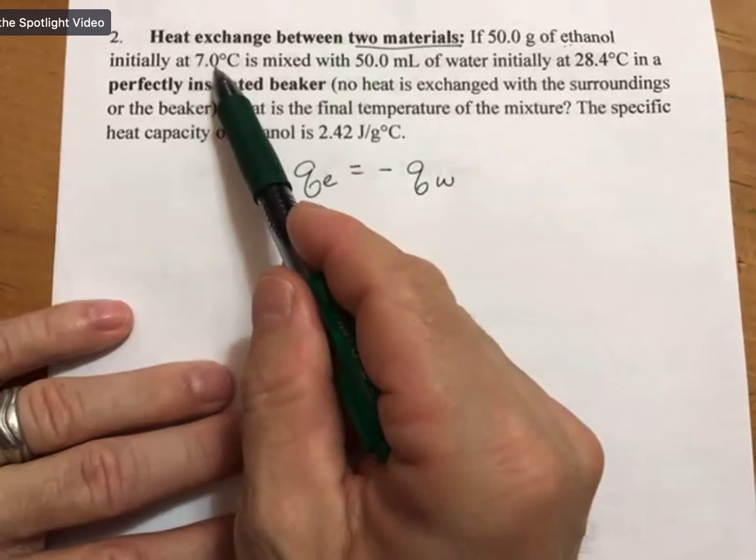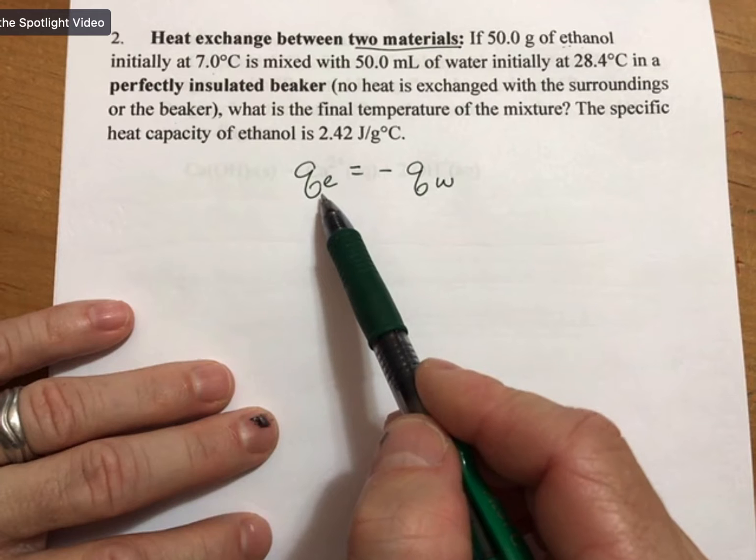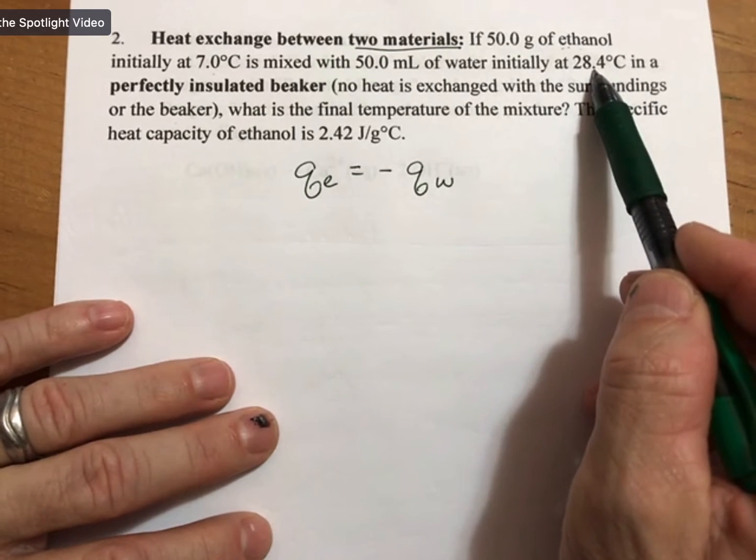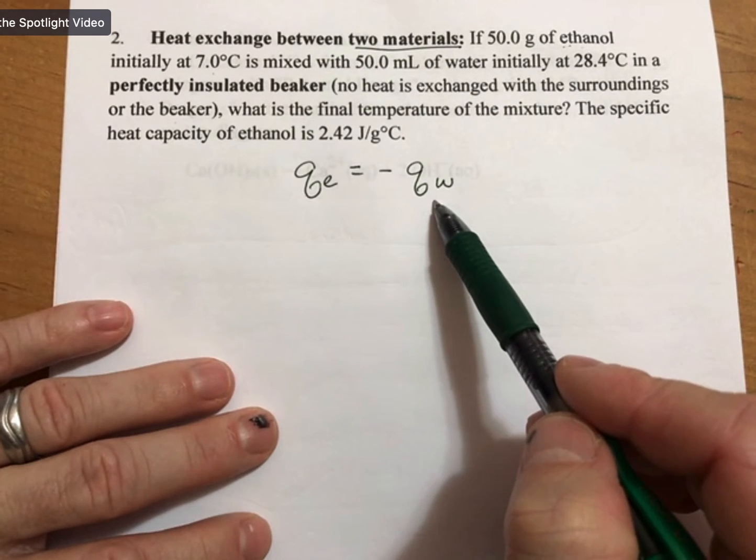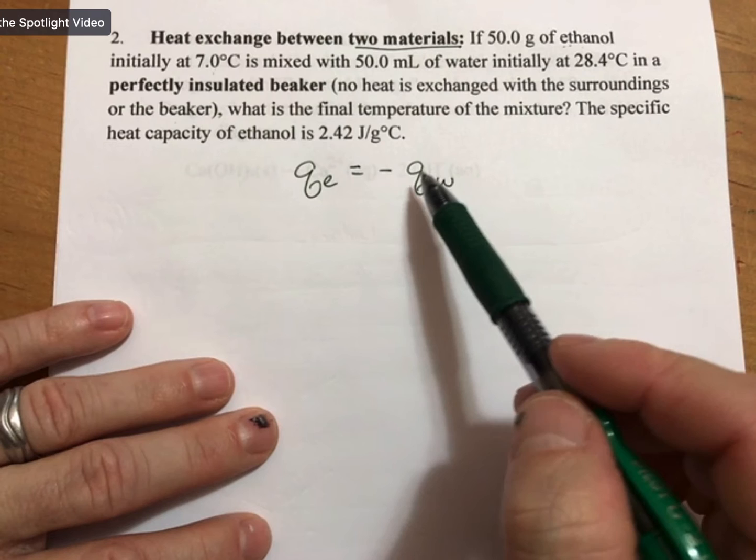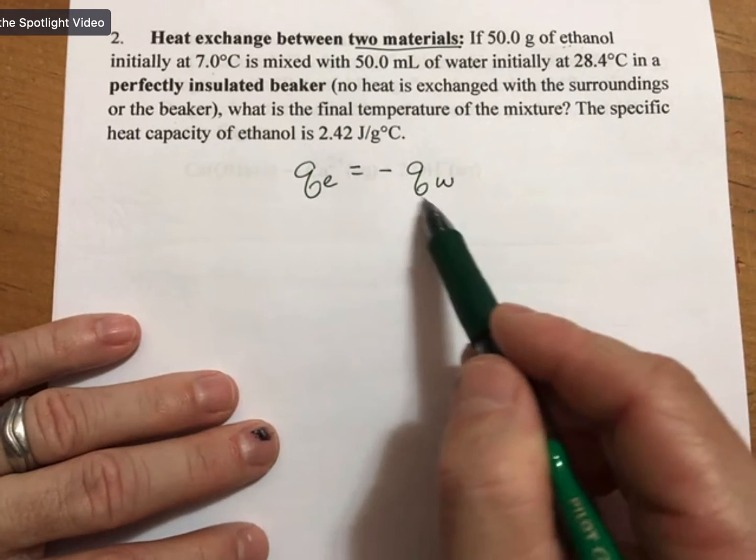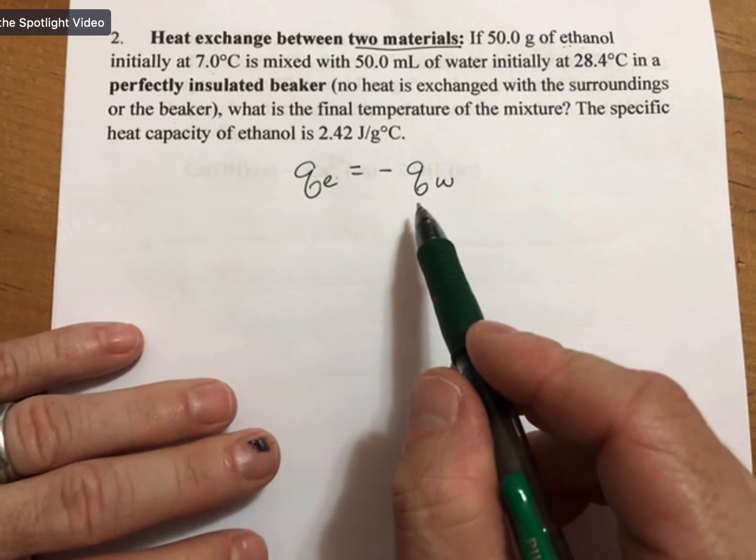Now we have an initial temperature of our ethanol, which means the ethanol is going to be changing temperatures. We have initial temperature of water, which means the water is going to be changing temperatures. And there's no balanced reaction, so all of those things combine to tell us that there can be no q reaction term in this problem.